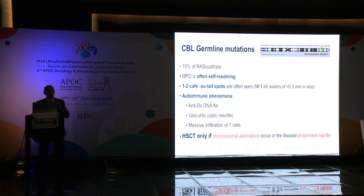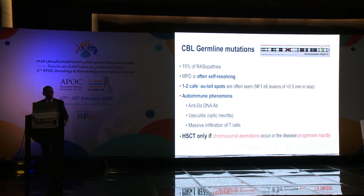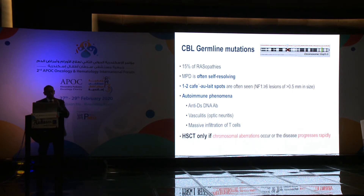The CBL germline mutation is included in JMML criteria; its myeloproliferative disorder is often self-resolving as reported in the literature. It can present with café-au-lait patches that may be misleading for NF1, but NF1 requires more than six lesions larger than 0.5 cm. CBL is associated with autoimmune phenomena, especially anti-double-stranded DNA and vasculitis. This vasculitis occurs in long-term survivors, and whether transplant can reverse it is debated. Some clinicians watch these patients, as spontaneous resolution can occur; stem cell transplant is indicated if chromosomal aberrations exist or disease progresses.